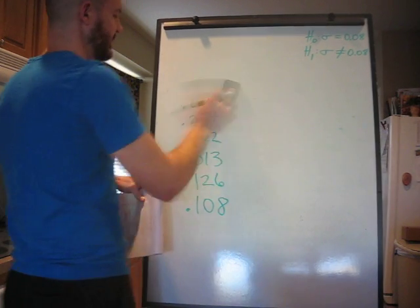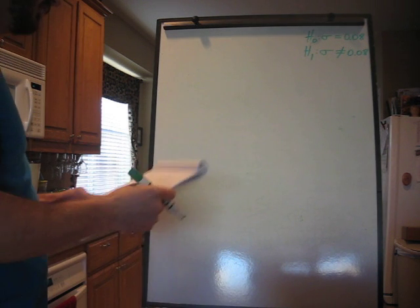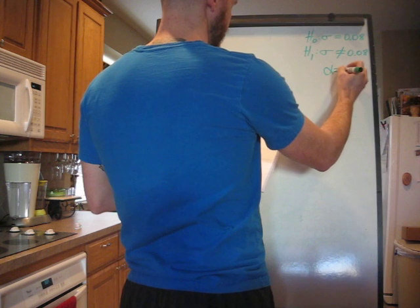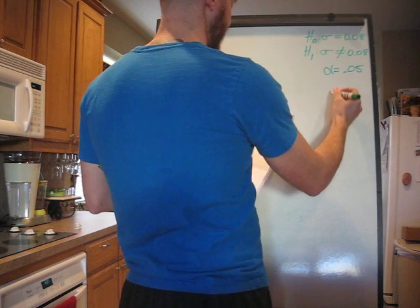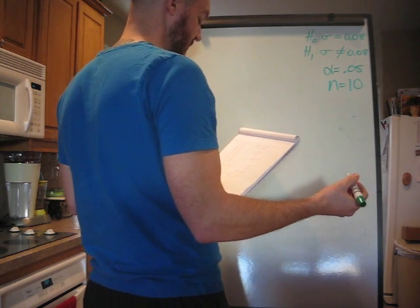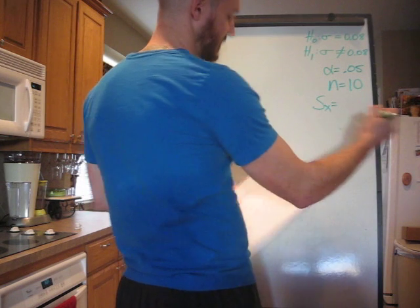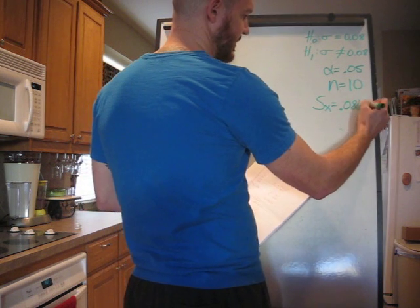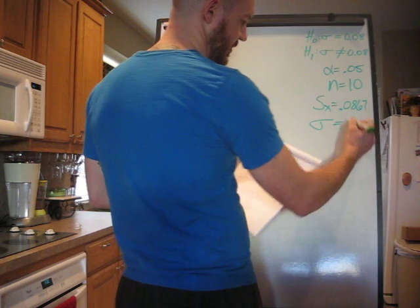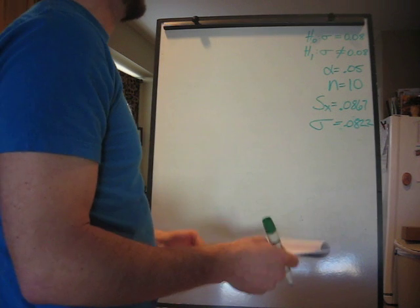I have very little whiteboard space to work with, as you can see. That's going to give you a whole list of information. We're not going to use all of it. Given from the problem was our alpha at 0.05 and n was 10 because we had 10 pieces of data. Now, from the one variable statistics list that it gave us, we're going to use the S sub X, which would be 0.0867, and we're going to use the population standard deviation, which was 0.0822. I think I believe I rounded those. Check my rounding to make sure I didn't mess that up.